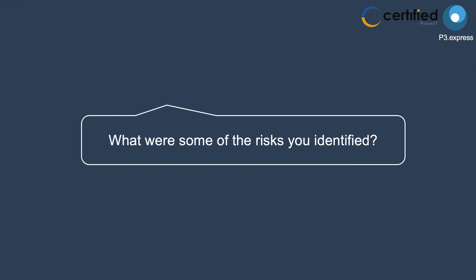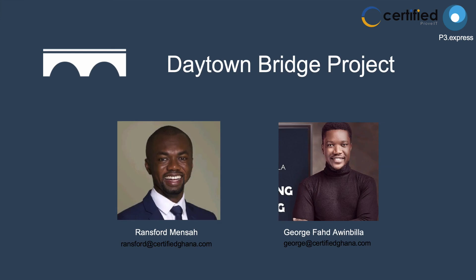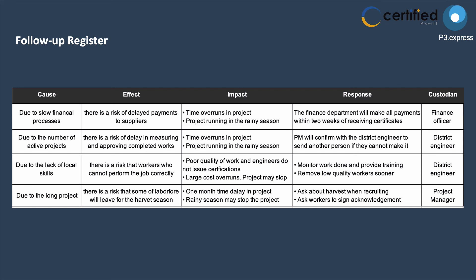Two risk examples: First, due to slow financial processes, there is a risk of delayed payments to suppliers, which could cause time overruns and push the project into the rainy season. The response is that the financial department will make all payments within two weeks of receiving certifications, with the financial officer as custodian to notify relevant stakeholders.